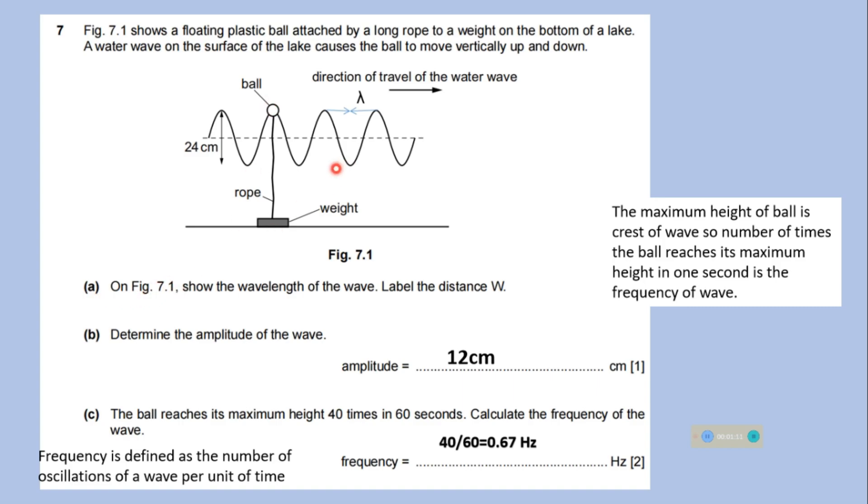On this figure we will show the wavelength of the wave, label the distance W. The horizontal distance between two adjacent crests or between two adjacent troughs is known as the wavelength. So here we have marked the distance.